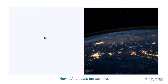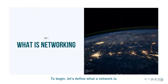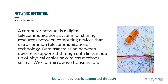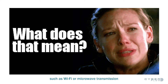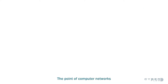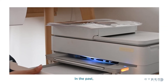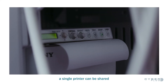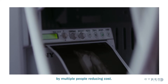Now let's discuss networking. A computer network is a digital telecommunications system for sharing resources between computing devices that use a common telecommunications technology. Data transmission between devices is supported through data links made up of physical cables or wireless methods, such as Wi-Fi or microwave transmission. The point of computer networks is to share resources, such as information or printers. In the past, each person in an office would need their own printer, but with a network, a single printer can be shared by multiple people, reducing cost.